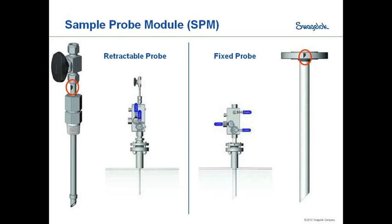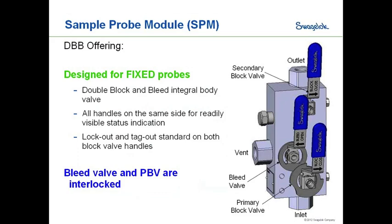For the fixed probe, there's a bleed valve and a secondary block valve interlocked with the primary block valve. In the operating position, the sample is coming out and you cannot open the bleed valve — the cam prevents it. By rotating the primary block valve off, the bleed valve is released. They're interlocked so you can't turn the bleed valve on while the main valve is on, and you have to turn the bleed valve off before turning the main valve back on — a safety-conscious design.